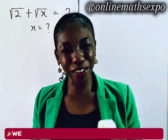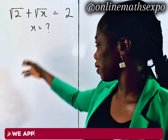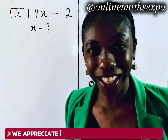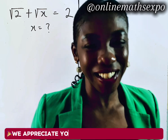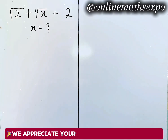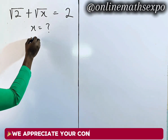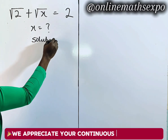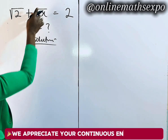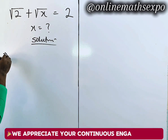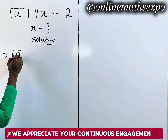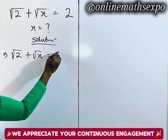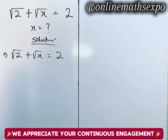Welcome! Let's solve this beautiful radical equation together — it's so easy. We're going to begin with our solution. So let's repeat what we have: the square root of 2 plus root x is equal to 2.